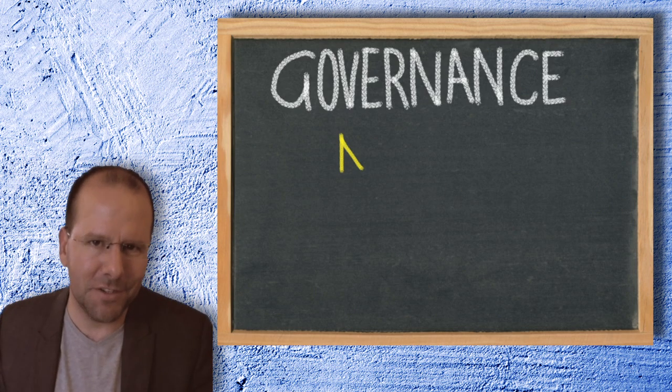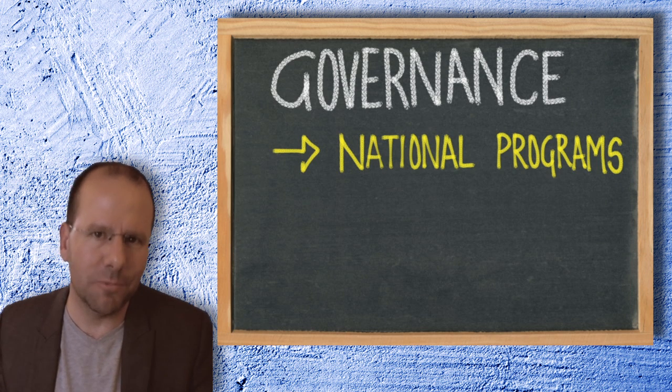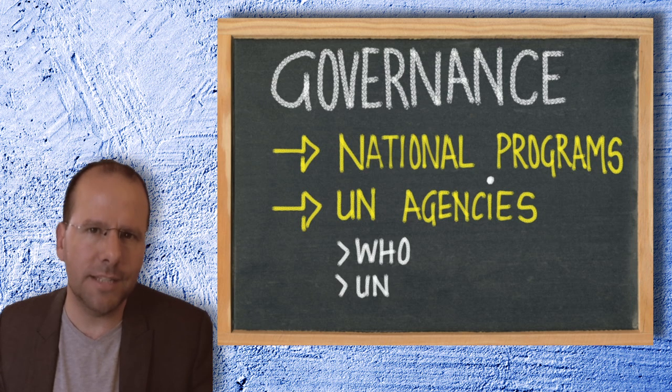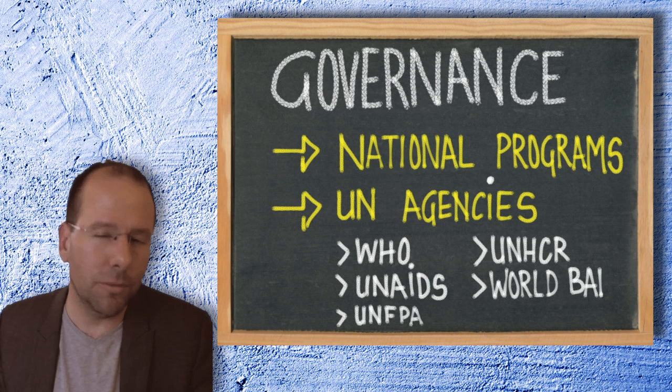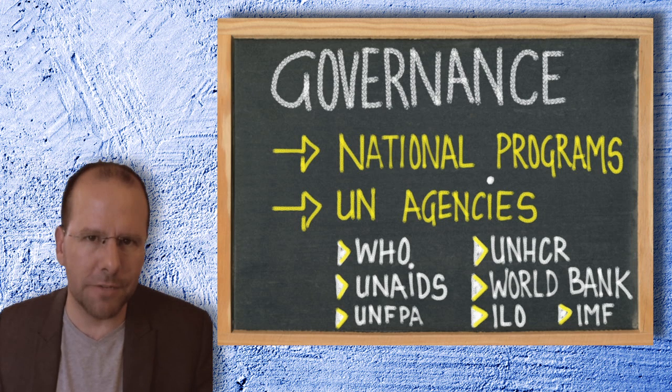In terms of governance, the most important actor, of course, is going to be the national programs themselves—the ministry of health within the countries that you're dealing with. But providing support to those ministries in the form of normative guidelines are the various UN agencies. That would include the World Health Organization, UNAIDS, UNFPA, UNHCR, the World Bank (which is not a UN agency), the ILO, and the IMF (which is also not a UN agency). But these are what we call supranational structures. They don't fall specifically within the jurisdiction of a particular nation-state.